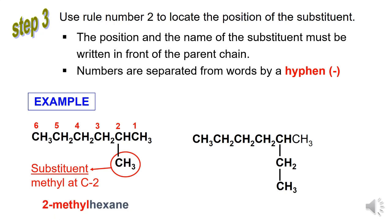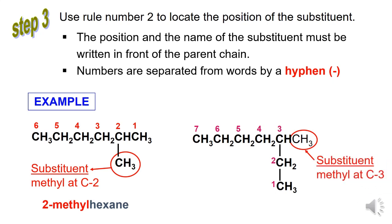Next example: it has one substituent group, CH3, bonded to the parent chain which consists of 7 carbons — called heptane. The substituent group is bonded to carbon number 3 and is called methyl. So the IUPAC name is 3-methyl-heptane.